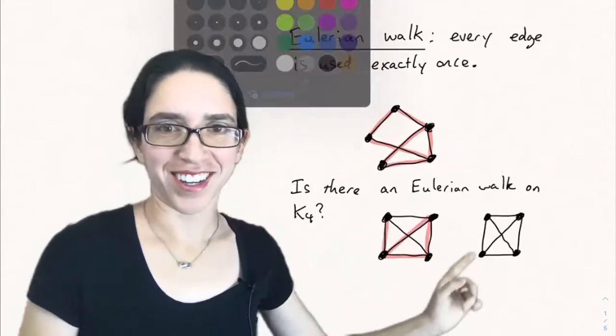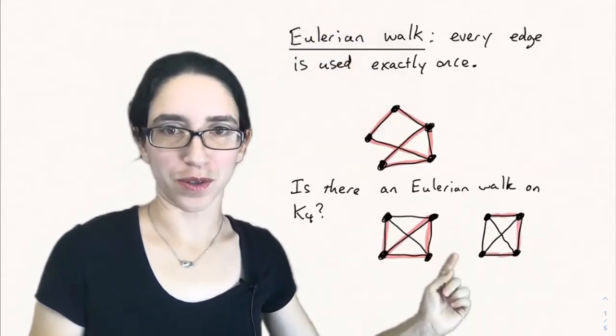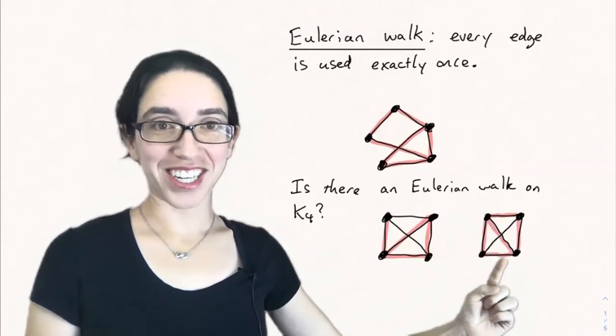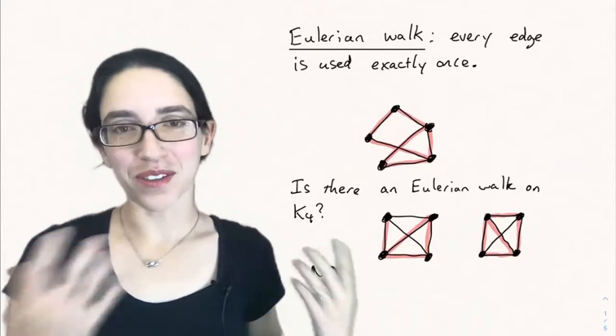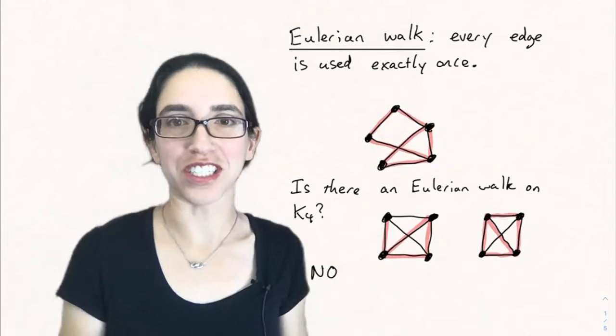I need to do it some other way. So let's try to go around the square first. Let's go around the outside square and then do the diagonals. Oh no, we're stuck again. We got stuck at the lower right-hand corner there. It turns out there's no way of doing an Eulerian walk on the complete graph k4 on four vertices.